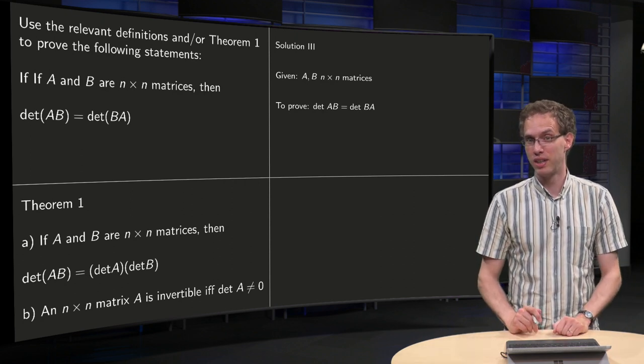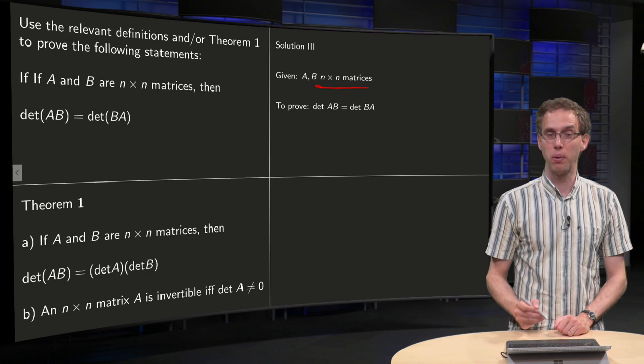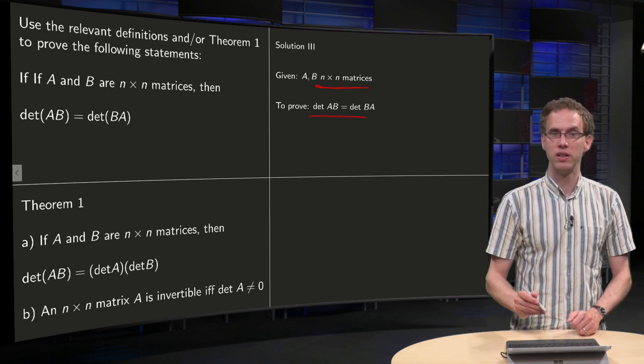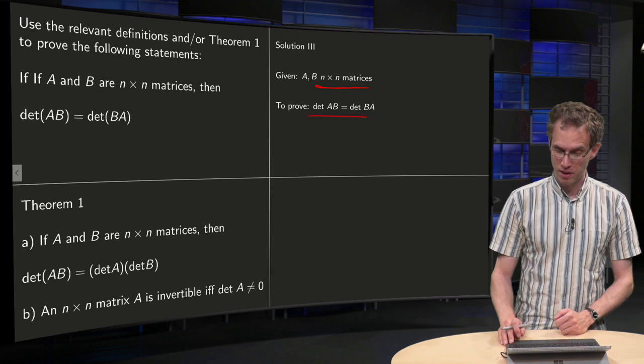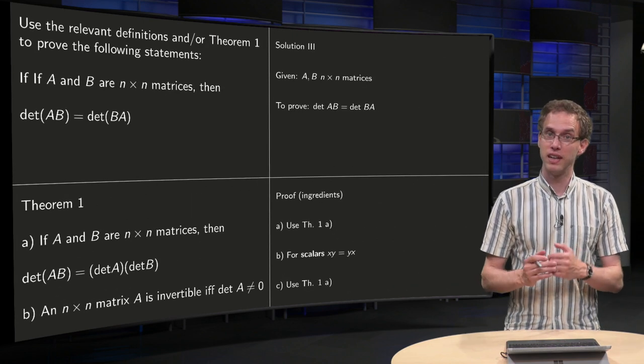Well, not much. It's only given that the matrices are square. And to prove? Well, only this statement. But how can we prove it? Well, the trick is as follows. What are the ingredients?